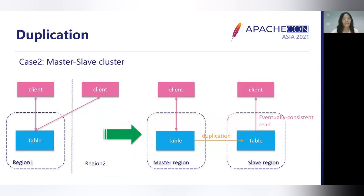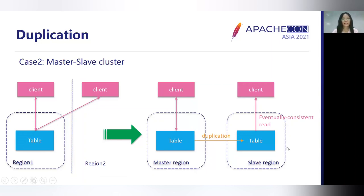Here is another classical use case. In region 1, the client reads and writes data. In region 2, the client only reads data. To avoid cross-region reads, we deploy a master and slave cluster. In the master cluster, the client writes and reads data. The data is then transferred by duplication, and the client deployed in the slave region can read data locally — though this read is eventually consistent.